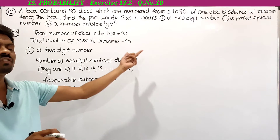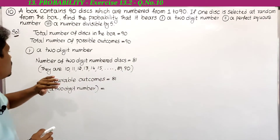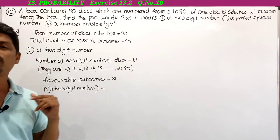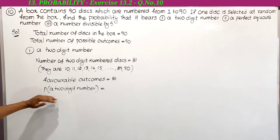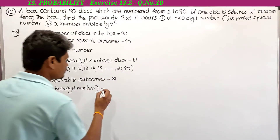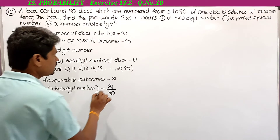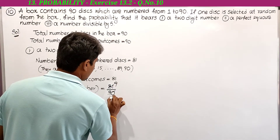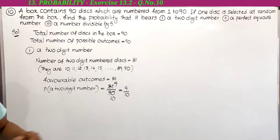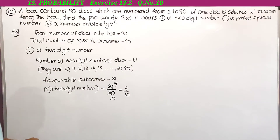Subtracting 9 from 90 we get 81 two-digit number discs. So favorable outcomes for the two-digit number is 81. The probability of a two-digit number P(A) = favorable outcomes / total possible outcomes = 81/90. Since 9 is the common factor, this simplifies to 9/10.